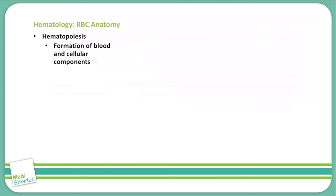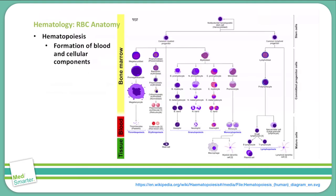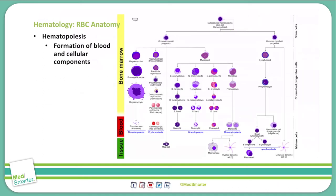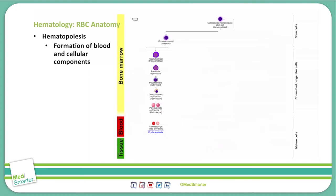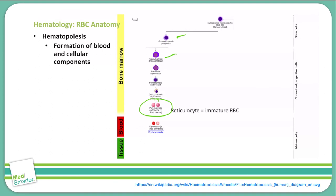The formation of red blood cells and the cellular components is called hematopoiesis. As you will see here in this chart, there are many different types of cells that come from the one main multi-potential hematopoietic stem cell, or hematocytoblast. We're going to follow hematopoiesis down to the common myeloid progenitors. That common myeloid progenitor will give off the pro-erythroblasts, which will then continue on down to form the reticulocytes. A reticulocyte is an immature red blood cell, and this can be seen on a blood smear.